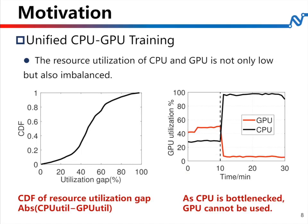In existing large-scale deep learning clusters, not only is resource utilization low, but the utilization gap between CPU and GPU is also high. The CDF figure shows that in our cluster over one week, more than 18% of the time the utilization gap between CPU and GPU exceeds 40%. This large gap is caused by poor job scheduling and resource allocation policies that do not manage heterogeneous resources in a unified way. When CPU-affinity jobs take up all CPU cores, other GPU-affinity jobs cannot be started due to the bottleneck at CPU.